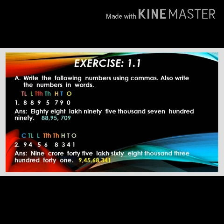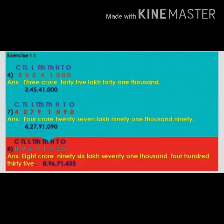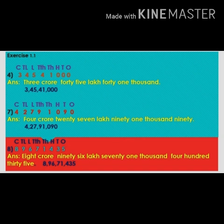Question number four: the given digits are 3,45,41,000. First we have to write the place values above the number — ones, tens, hundreds, thousands, ten thousands, lakhs, ten lakhs, crore. Here we also have an eight-digit number. Now we write the number name: three crores, 45 lakhs, forty-one thousand.